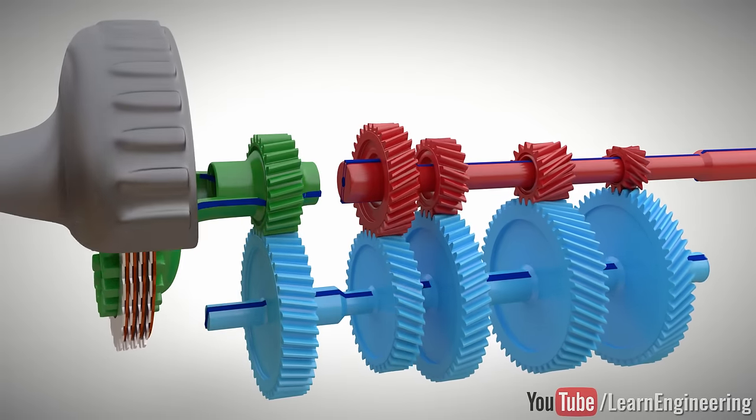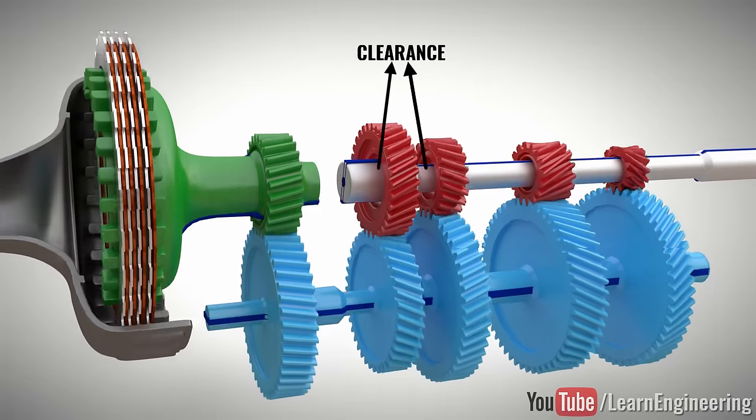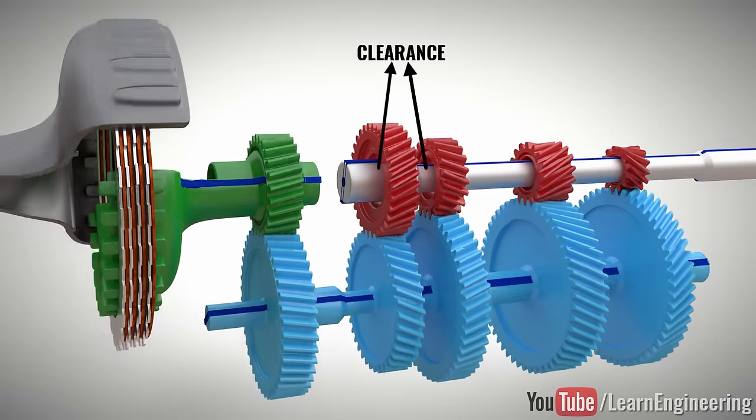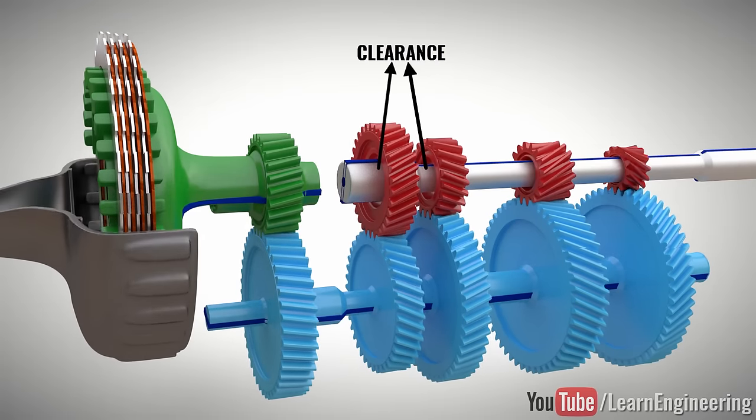However, the output gears are not fixed with the output shaft, and you can even see a gap between the output gears and shaft. If we connect only one output gear to the shaft, the shaft will have the speed of the connected gear.